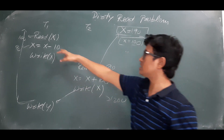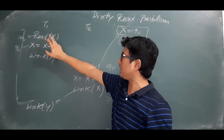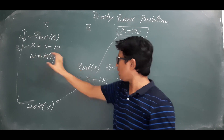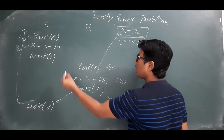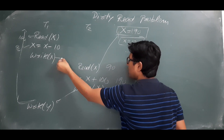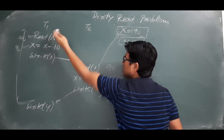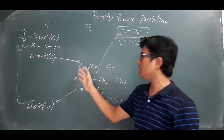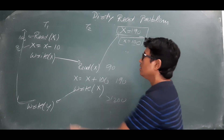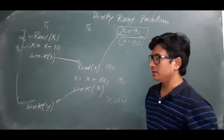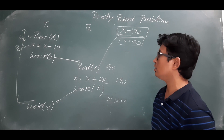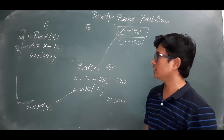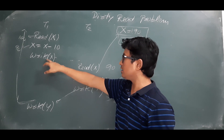But because T1 had read x and reduced it to 90, T2 read that value. T2 read the value that came from T1's modification — whatever modification transaction T1 had done, T2 read it, and so this dirty read problem occurred.